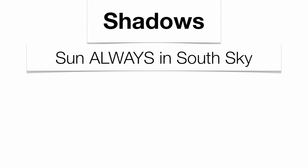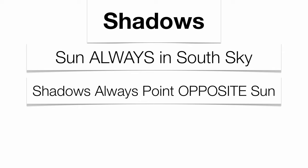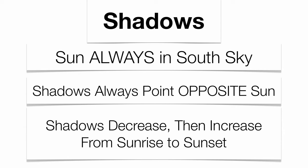Shadows are going to be important — they always tend to be asked on your Regents exams. You have to realize that the noon sun is always in the southern sky here in New York State, which means your shadow is always going to point in the opposite direction. So whether the sun is in the east, in the southern sky, or setting in the west, your shadow always points in the opposite direction of the sun. Your shadow length is going to vary as well: from sunrise to noon it gets smaller, and from noon to sunset it gets larger.